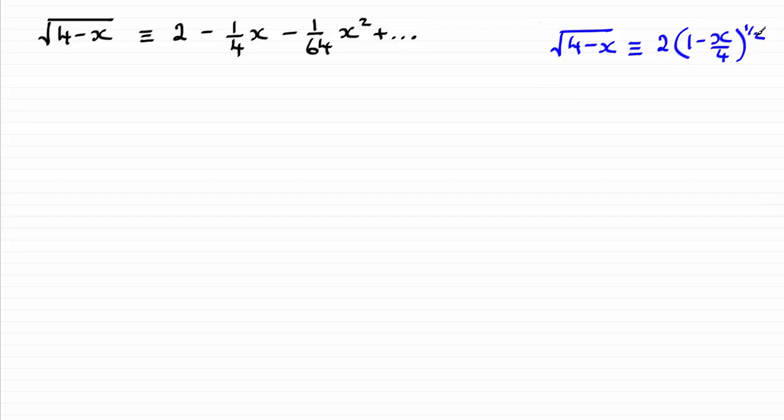Now when you've got a non-integer power as we have here, the binomial expansion is only valid for values in the x term that lie between minus 1 and 1.